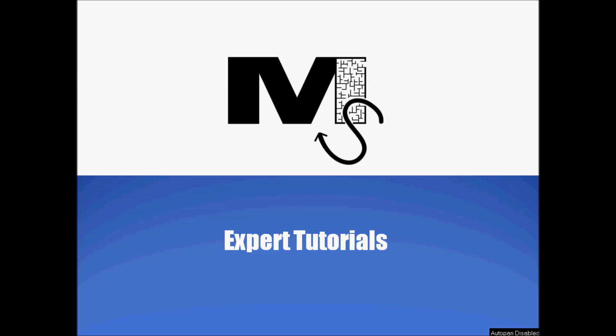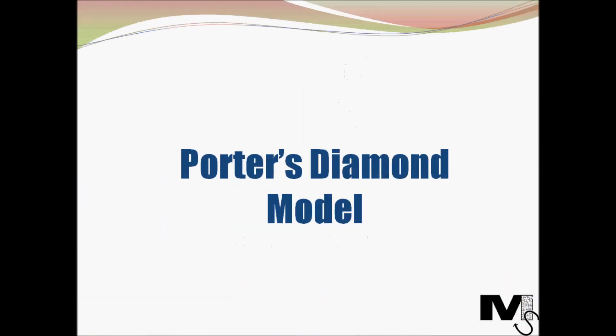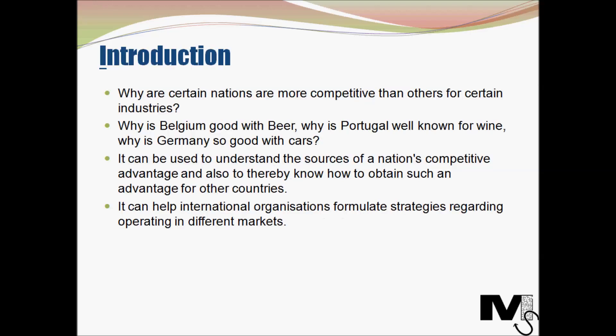Hello everyone and welcome to Mr. Simplifier's Tutorials. In this tutorial we're going to look at Porter's Diamond Model. Michael Porter's renowned diamond model helps us understand why certain nations are more competitive than others for certain types of industries — for instance, why is Belgium so good with beer, why is Portugal well known for wine, why is Germany so good with cars?